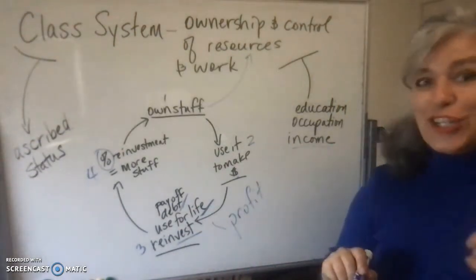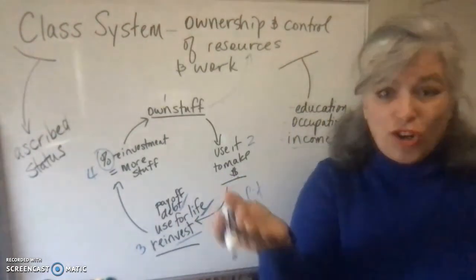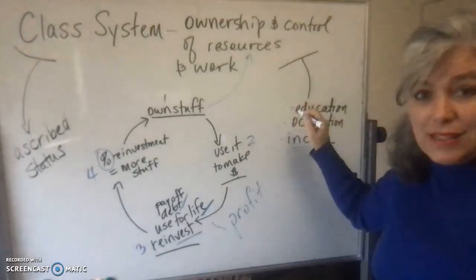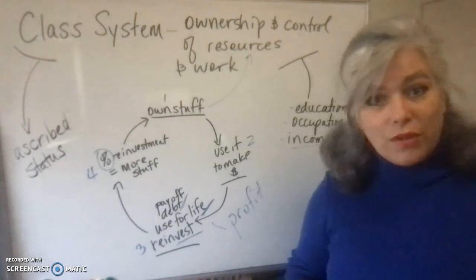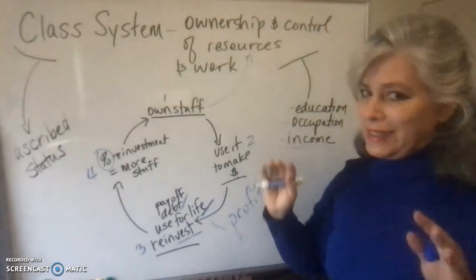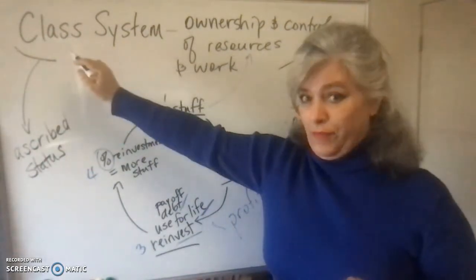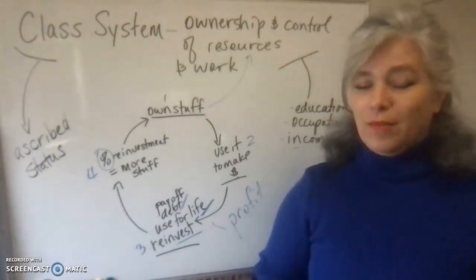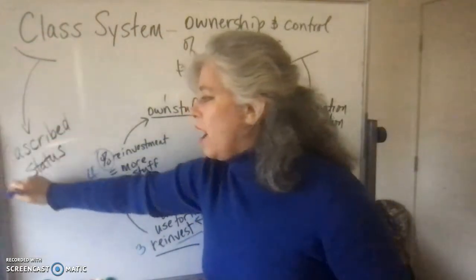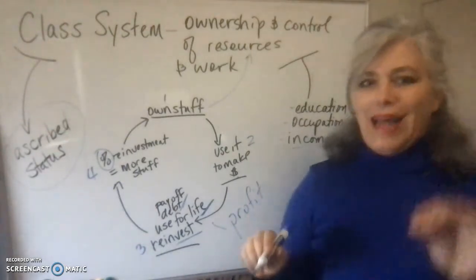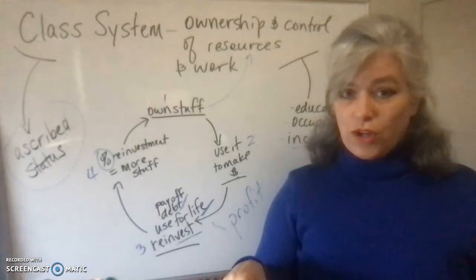That's why education, occupation, and income are achieved statuses you're supposed to be able to increase. The lawnmower example parallels education: you're in school because your degree gives you the opportunity to be taken seriously when applying for jobs, and you choose that job based on initial and future income potential. Capitalism as a macro-scale economic system is directly connected to the macro-scale social stratification system we call social class.